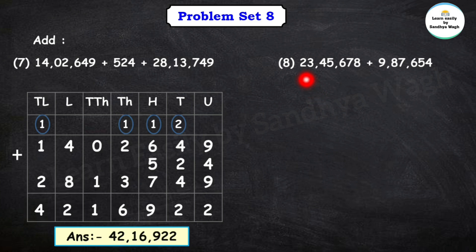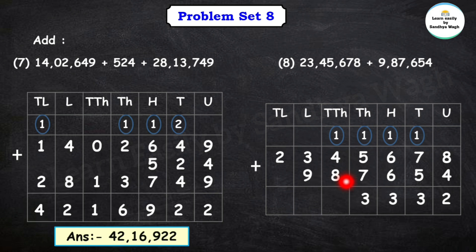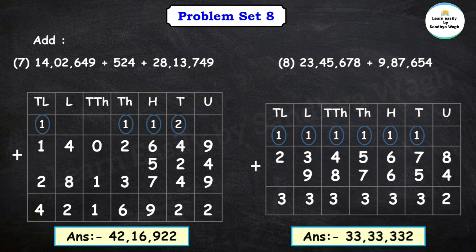Next addition: 23 lakh 45,678 plus 9 lakh 87,654. Let's arrange and add. 8 plus 4 is 12, write 2 carry 1. 7 plus 5 plus carry is 13. 6 plus 6 is 12, plus carry is 13, write 3 carry 1. 5 plus 7 plus carry is 13. 4 plus 8 is 12, plus carry is 13, carry 1. 3 plus 9 plus carry is 13, carry 1. 2 plus carry is 3. So our final answer is 33 lakh 33,332.